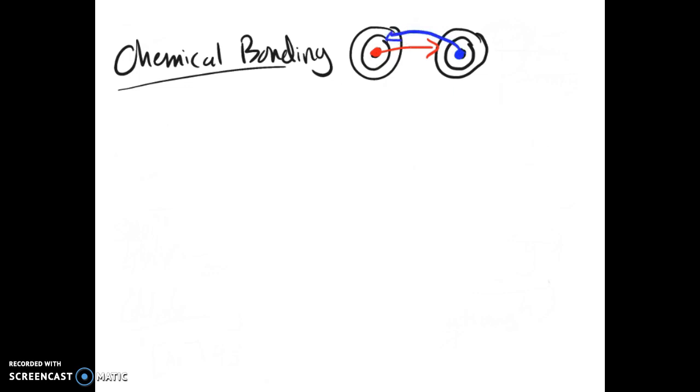Now, because they're both attracted to each other, that'll start to pull them closer and closer together. Now, as far as chemical bonding goes, there are two types: ionic bonding and covalent bonding.